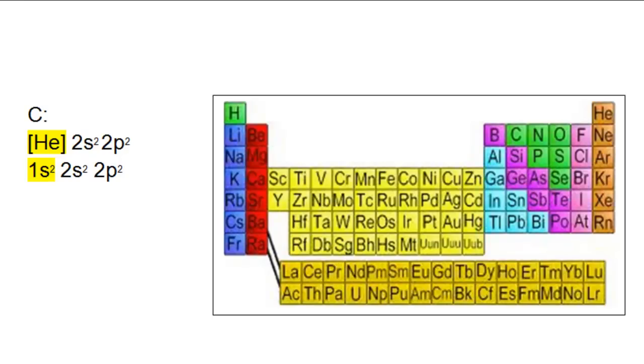I'm going to teach noble gas electron configurations by example. The noble gas electron configuration for carbon is the symbol of helium in brackets followed by 2s2, 2p2.